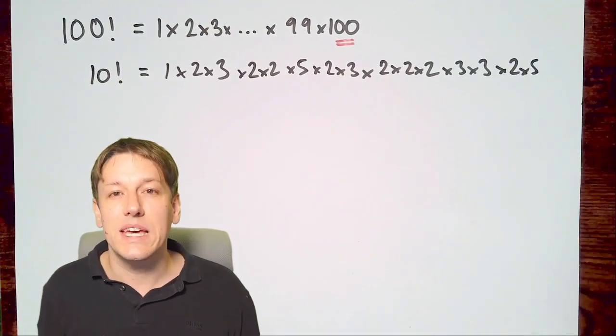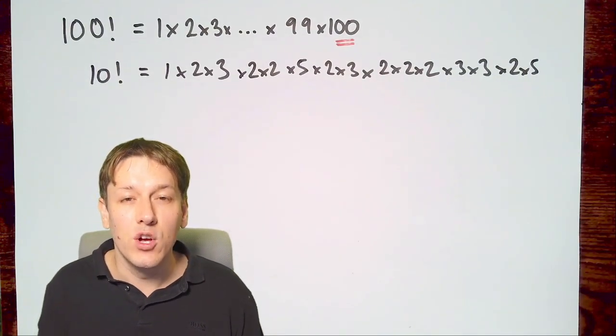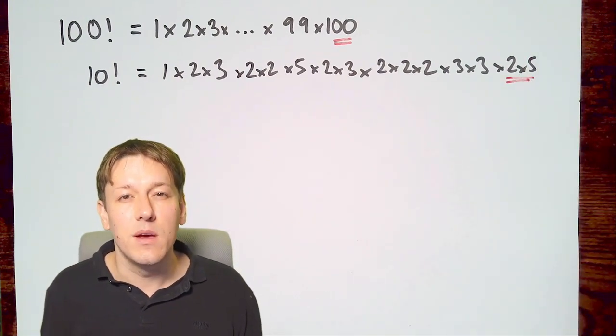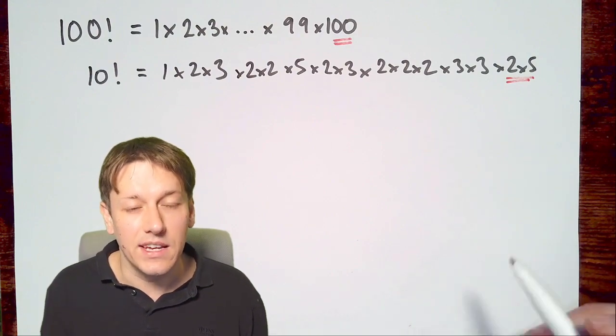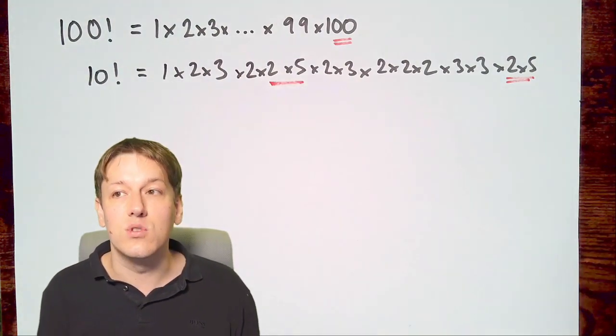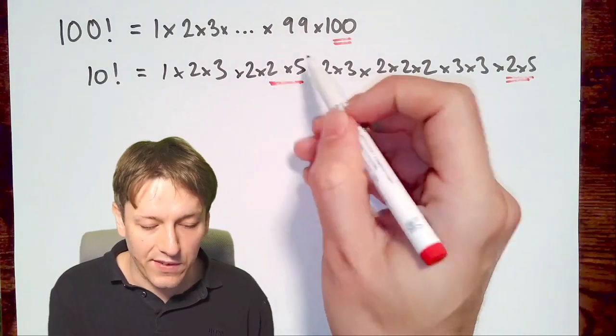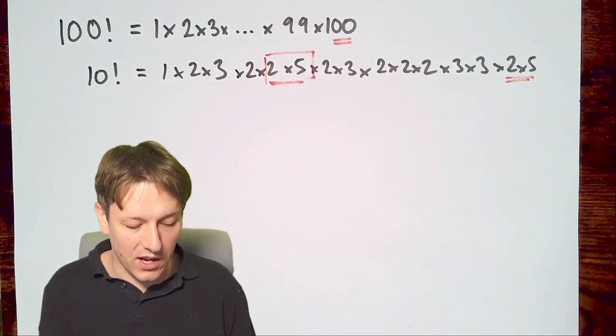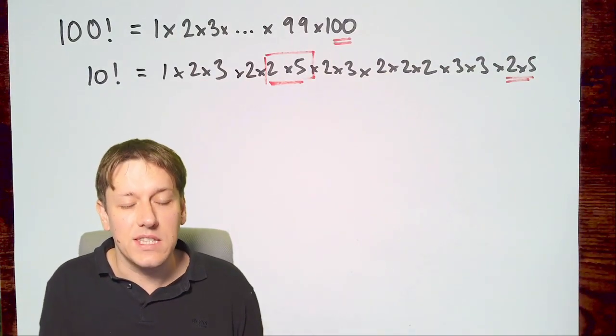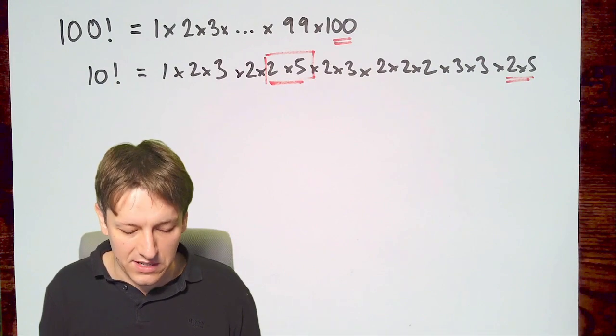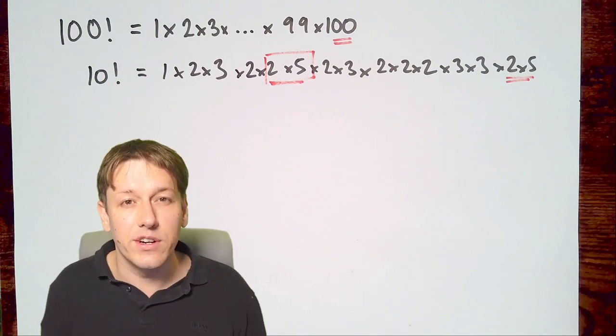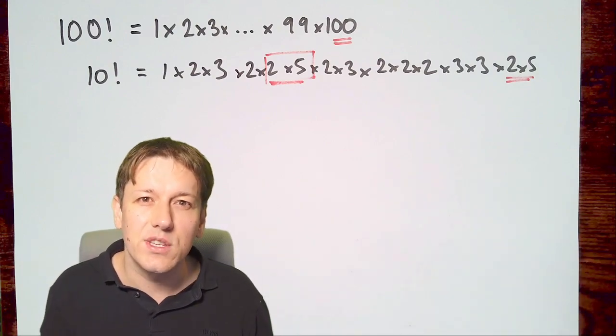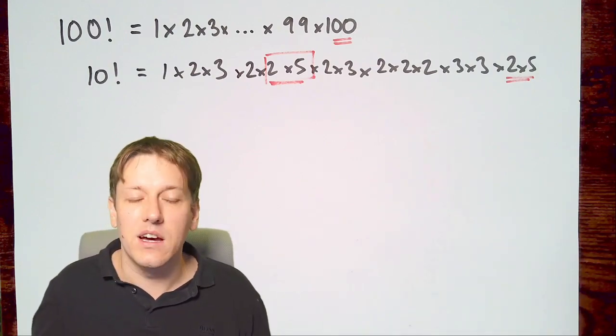So if we think about where we get zeros arising in this number, we do get that one that comes from multiplying by 10 at the end, which is 2 times 5. But we also get 2 times 5 in other places as well. So actually, 5 factorial will end in a zero because it's got 2 times 5 or 4 times 5 in it. And what we notice here is that there are loads of 2s in the factorization of 10 factorial and in any larger number factorial, but not so many 5s. So it's the 5s that are rare and they're the ones that we are looking out for.